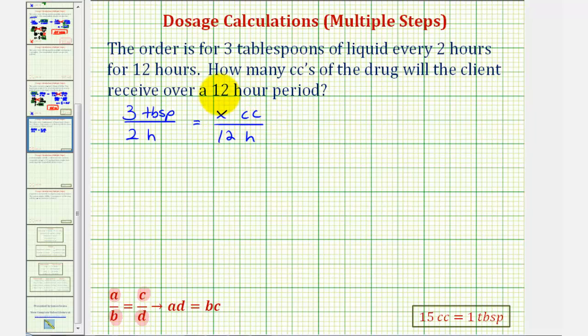Now it's important to recognize that while we do have the same units on the bottom (hours and hours), we do not have the same units on top. We have tablespoons here and cc's here, which means before we cross multiply and solve for x, we have to convert either cc's to tablespoons or tablespoons to cc's.